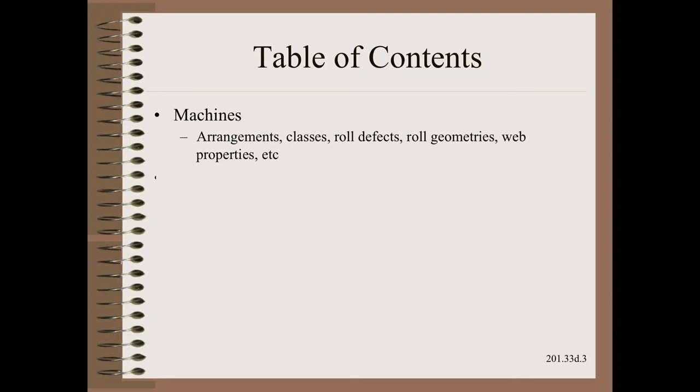As the title suggests, the book is broken into three self-standing sections. In the machine section, we cover all the arrangements and classes, as well as roll defects and web properties.